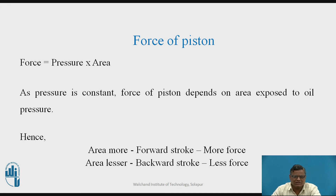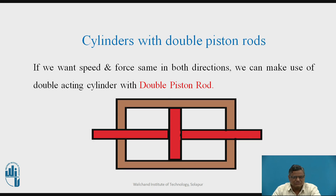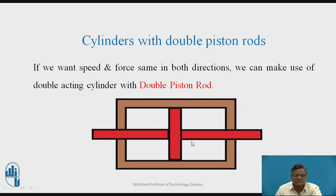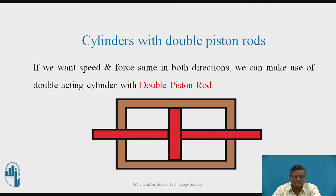In summary, velocity and force both depend on area. During the forward stroke: velocity is lesser and force is more. During the return stroke: velocity is more and force is lesser. To have equal speed and force in both directions, a double acting cylinder with two piston rods — one on the left and one on the right — can be used, making the areas on both sides equal.